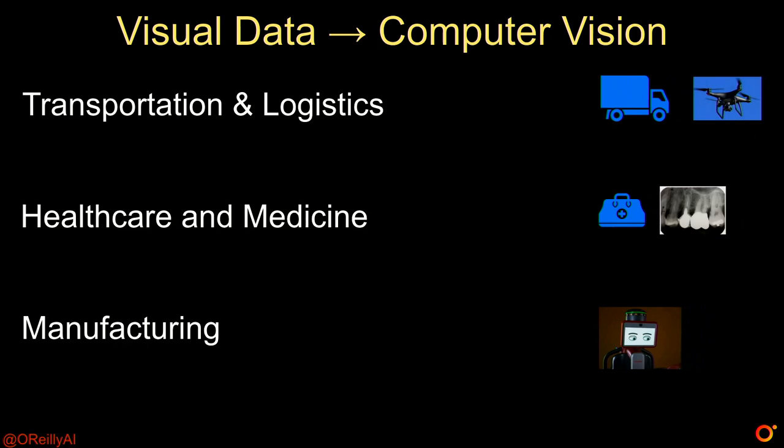Computer vision is probably the area with the most activity, measured in terms of patents, number of start-ups, and use cases. You have images and video being generated from cameras, digital imaging, and sensors like LIDAR, for example.